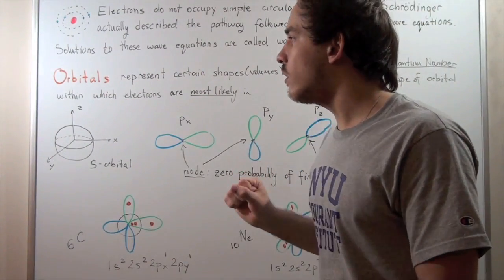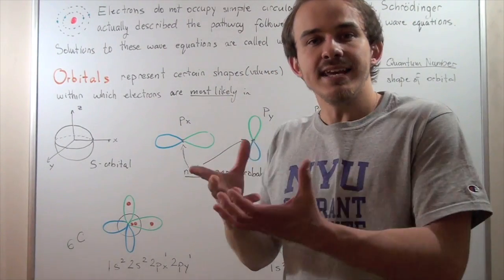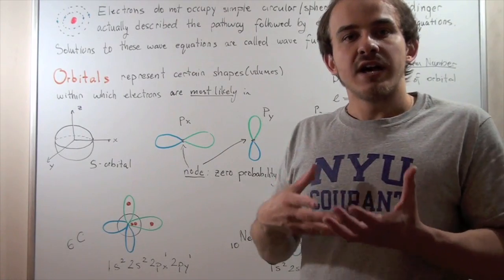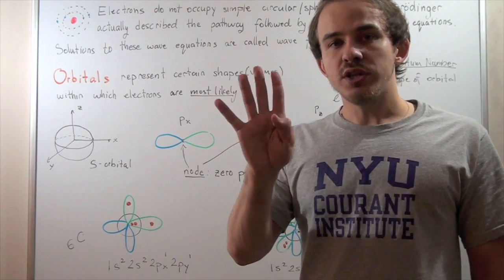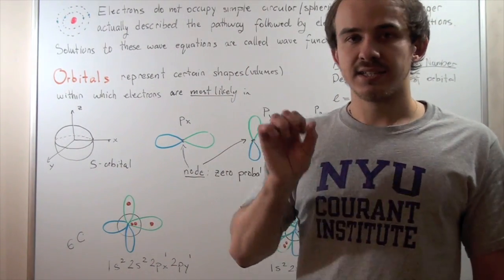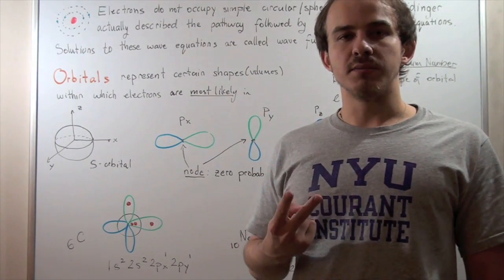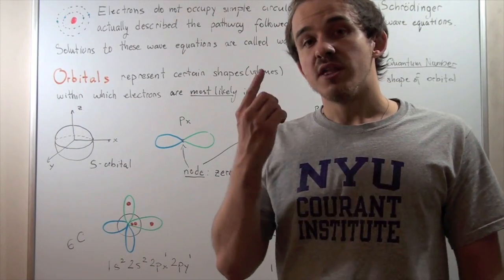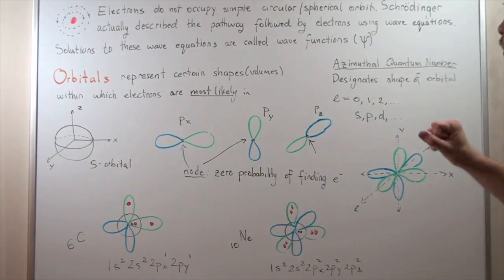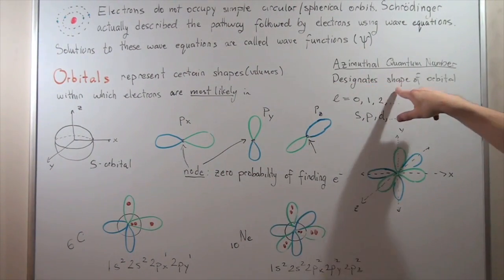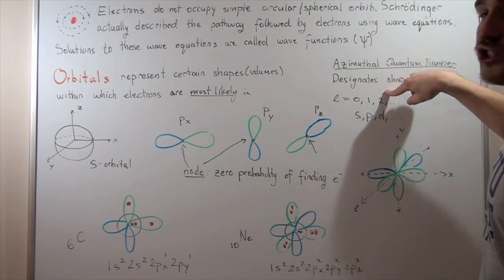Before we talk more about orbitals, let's recall what quantum numbers are. Quantum numbers are simply the ID of our electrons — each unique electron in a given atom has four unique quantum numbers. We have the principal quantum number, we have the azimuthal quantum number, and two more. The principal quantum number gives the energy level of that electron. The azimuthal quantum number, represented by the letter L, designates the shape of the orbital. It can be 0, 1, 2, and so on — 0 being the S shape, 1 being the P shape, 2 being the D shape.